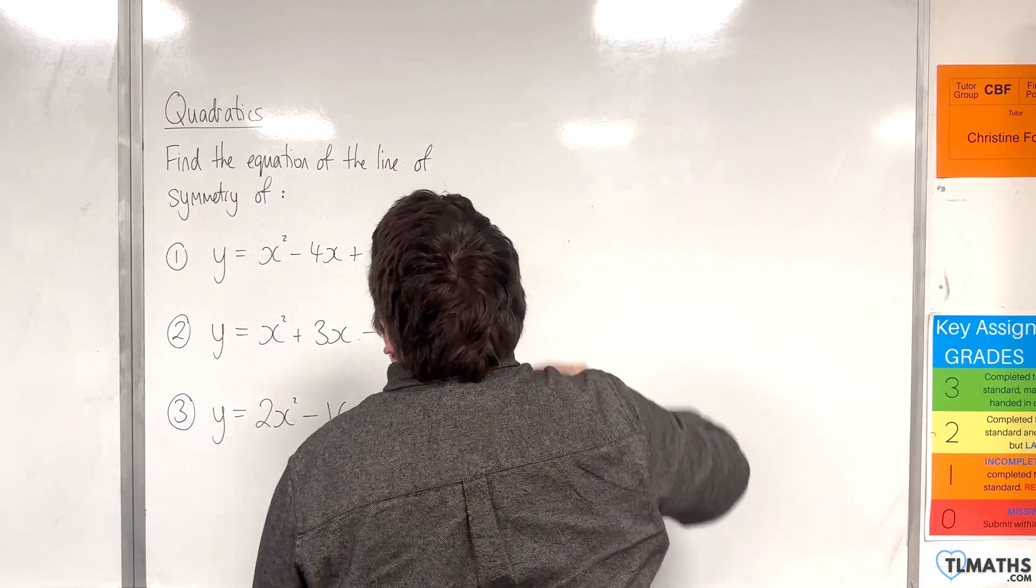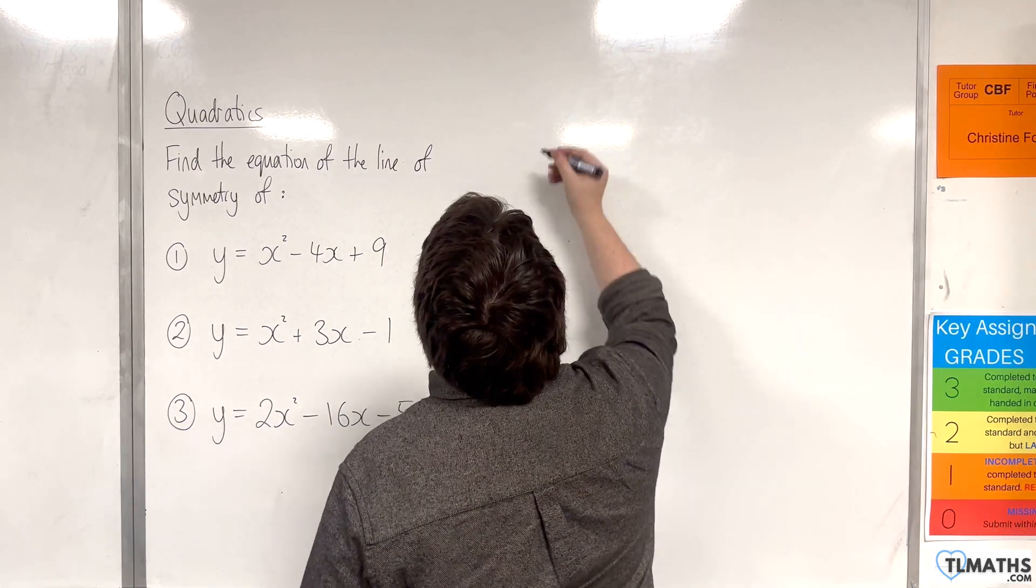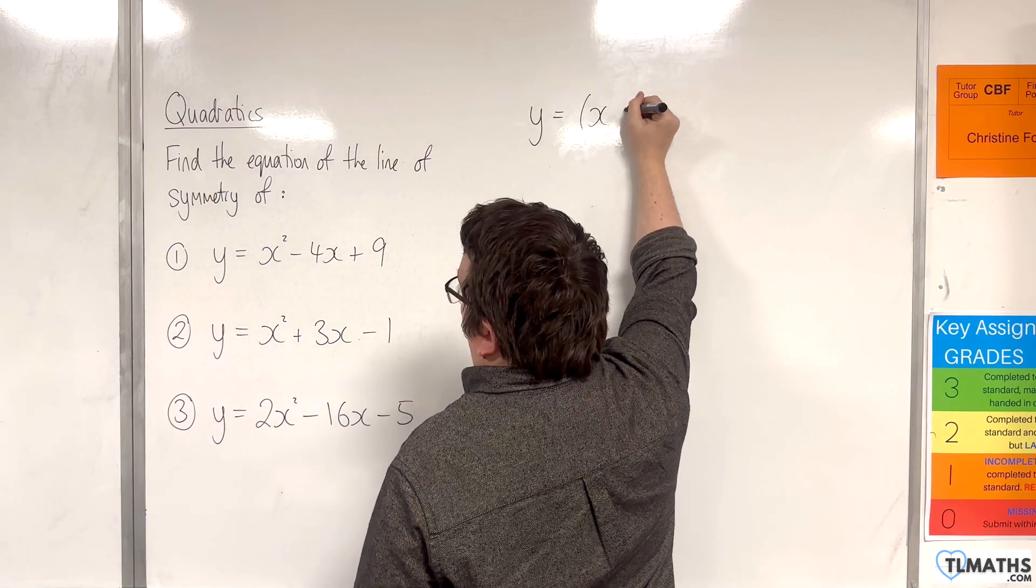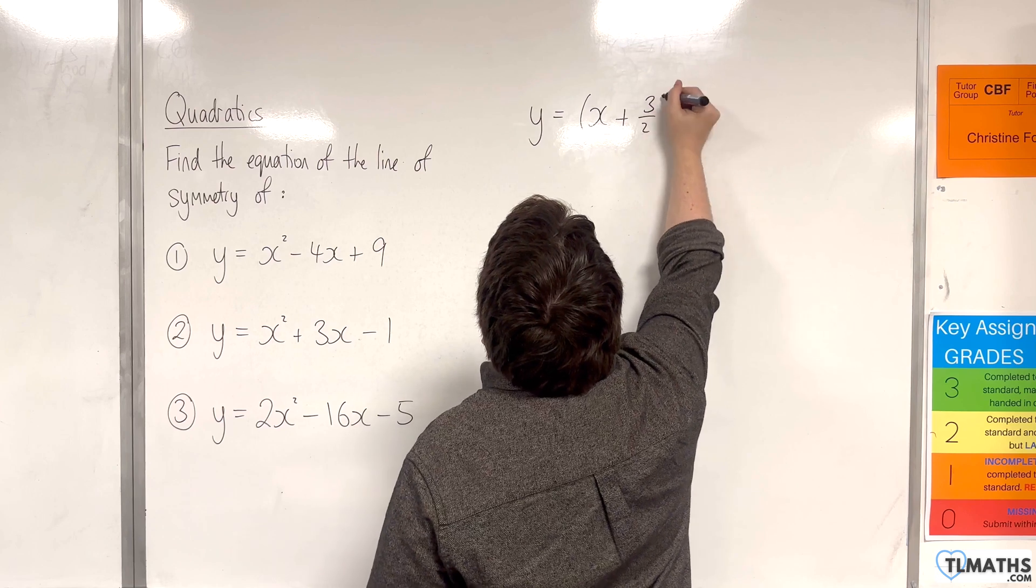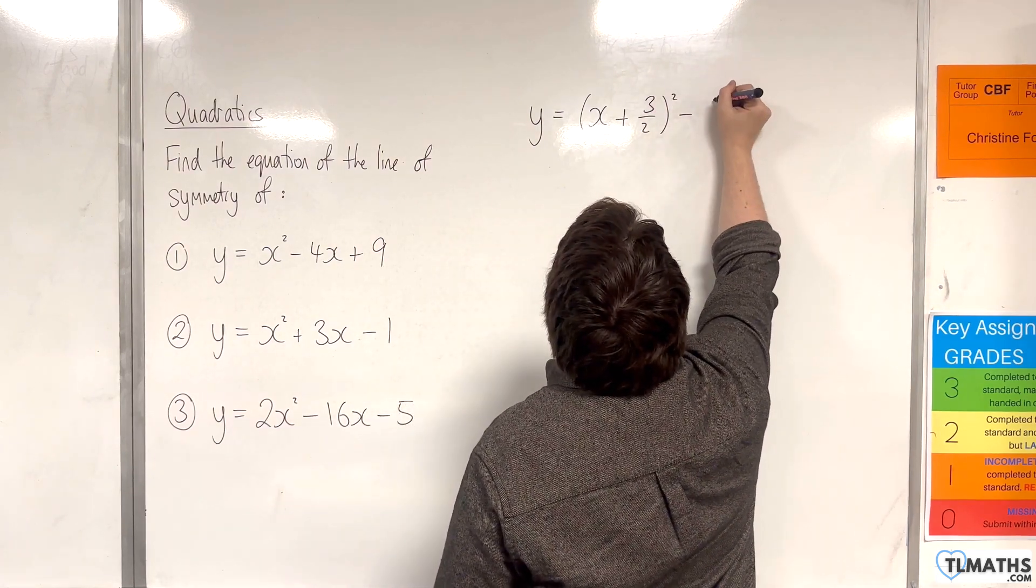Let's take a look at question number 2, y equals x squared plus 3x take away 1. So again, I'll complete the square, and I'll write that as x plus 3 halves squared. Then I need to take away that term squared, so 9 quarters.